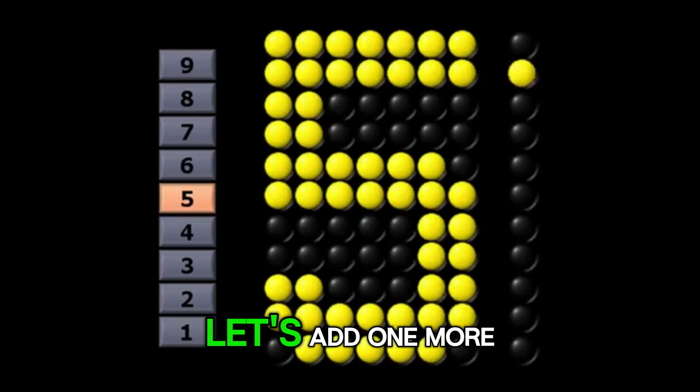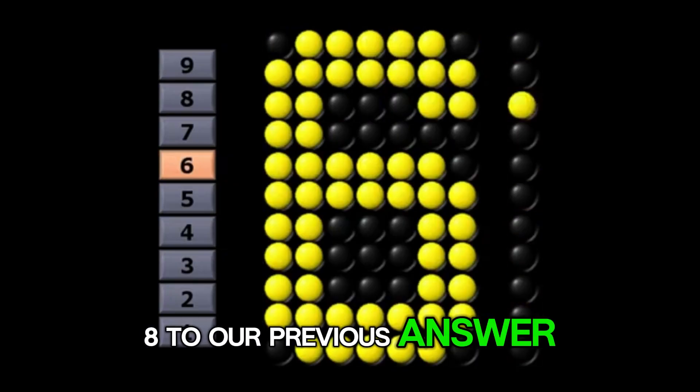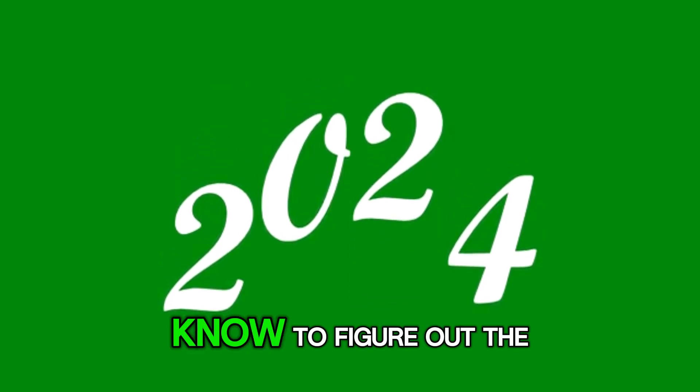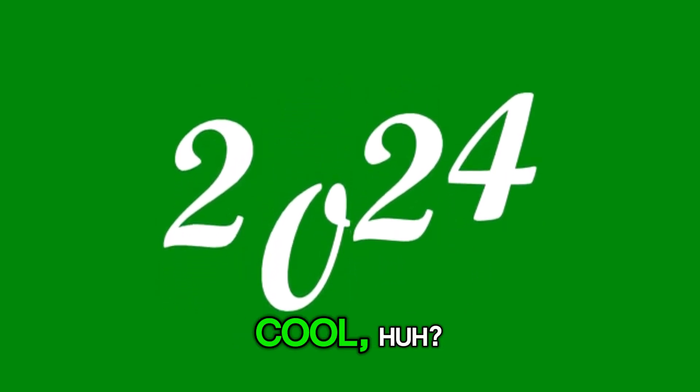Ready for the next step? Let's add one more eight to our previous answer. Sixteen plus eight equals twenty-four. That gives us eight times three equals twenty-four. We're using what we already know to figure out the next answer. Cool, huh?